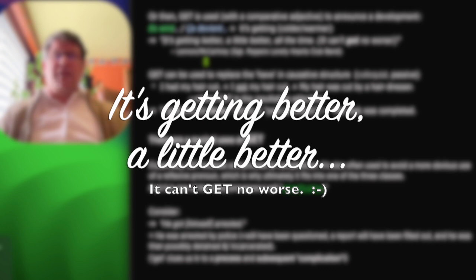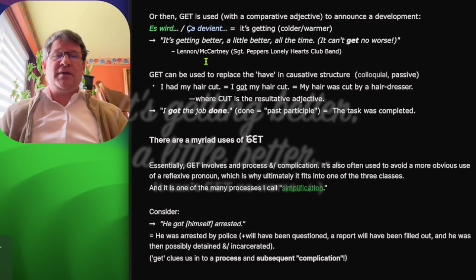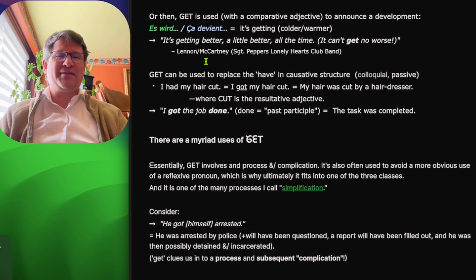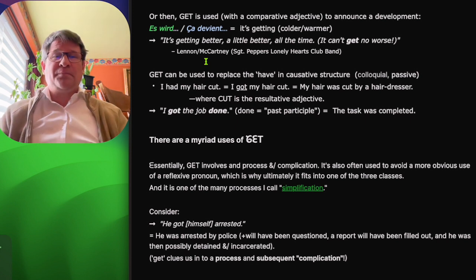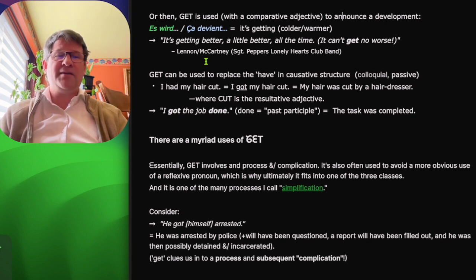Get can be used to replace the have in the causative structure. I had my hair cut, or I got my hair cut. My hair was cut by a hairdresser, an expert, a professional. Where cut is the resultative adjective. I got the job done. Done is not a past participle. These are resultative adjectives showing that the task was completed.